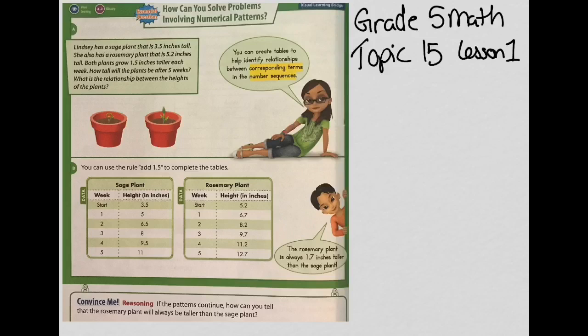Lindsay has a sage plant that's 3 and 5 tenths inches tall, and a rosemary plant that's 5 and 2 tenths inches tall. Both plants grow 1 and 5 tenths inches taller each week. How tall will the plants be after 5 weeks, and what is the relationship between the heights of the plants? Lindsay says you can create tables to help identify relationships between corresponding terms in number sequences — we're going to be looking at patterns.